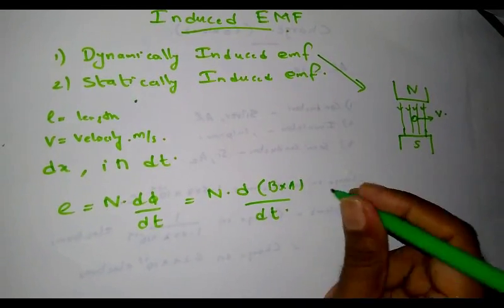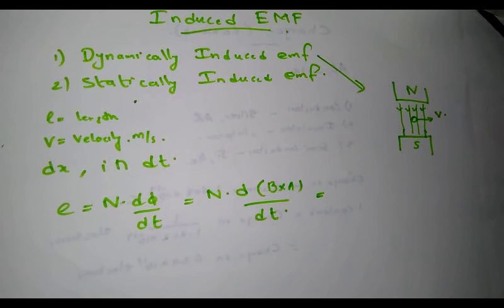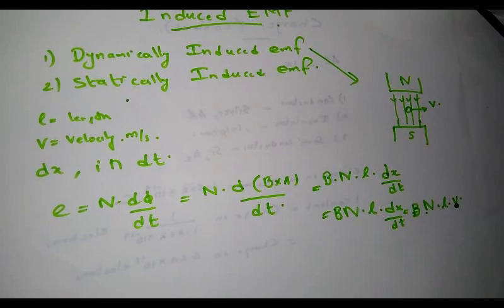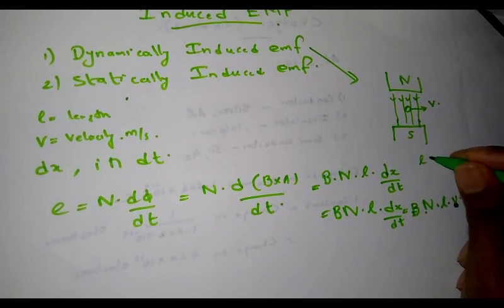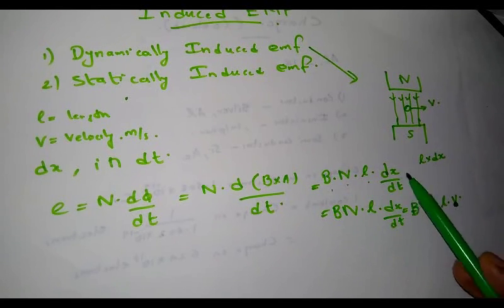If the conductor is moved at velocity v through a small distance dx in time dt, then the area swept by the conductor is equal to l into dx — that is, the length of the conductor l multiplied by that small distance dx. Therefore, the induced EMF equals B into N into l into dx/dt. Since dx/dt is velocity v, this gives EMF induced equals B into N into l into v.